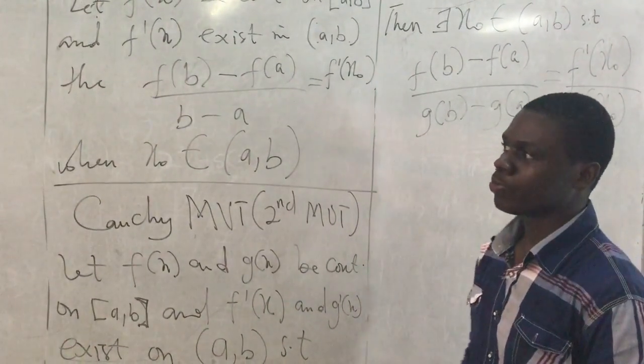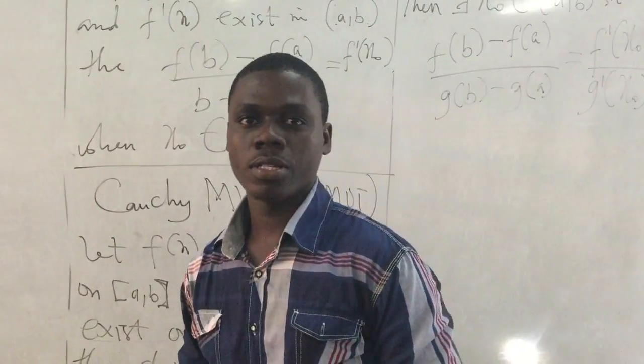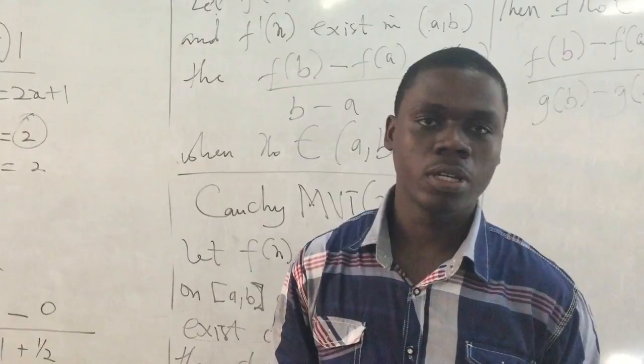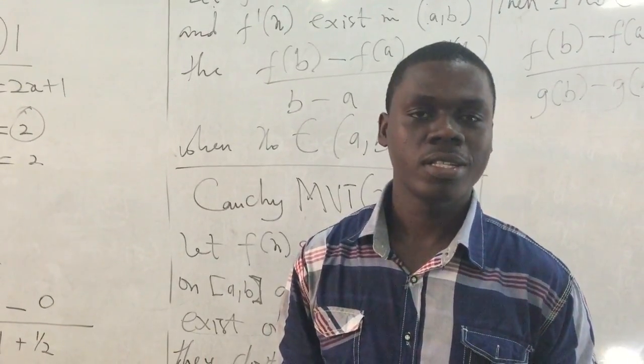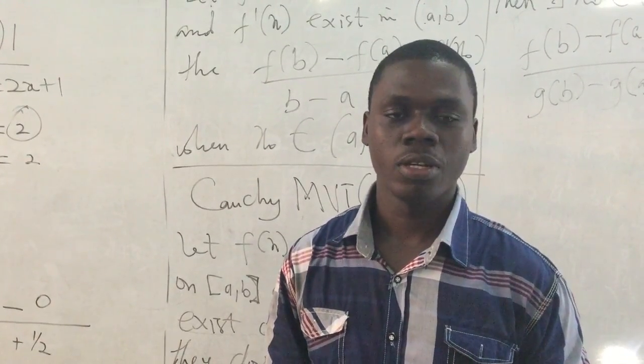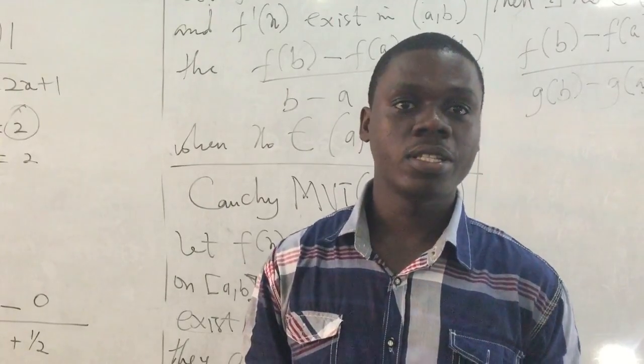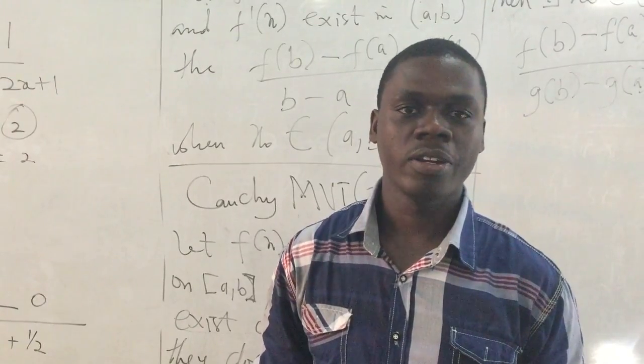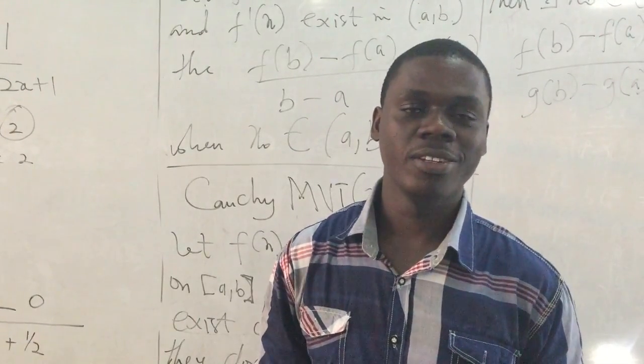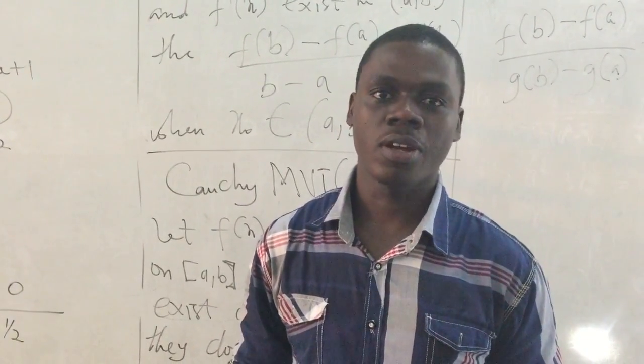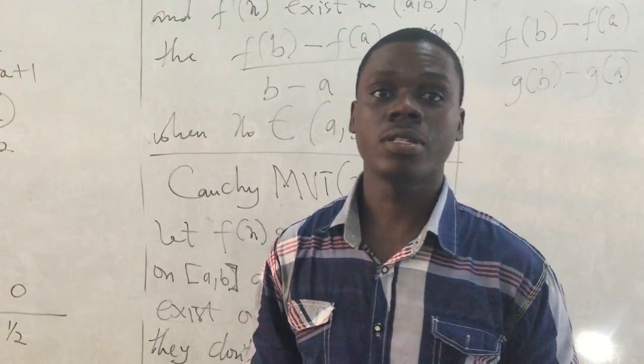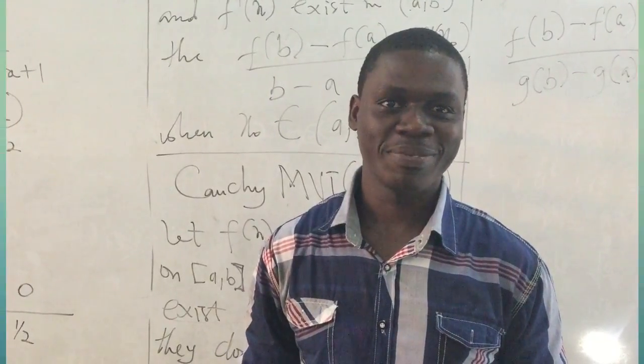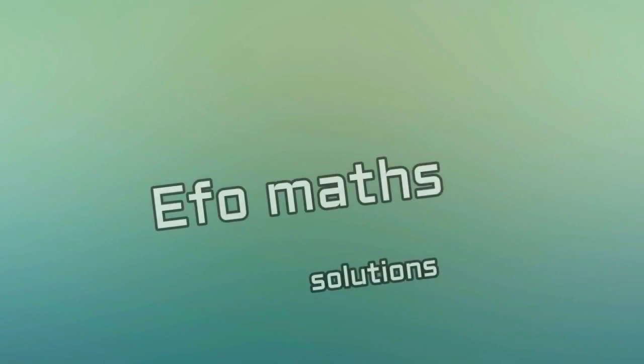That is the Cauchy Mean Value Theorem. Unlike the first one where we are looking at one function, now we are looking at two functions which are continuous on the closed interval, their derivatives also exist in the open interval such that they don't vanish together. And that will be the Cauchy Mean Value Theorem. So I will end today's video here. We will do more sessions as far as the differential theorems are concerned in our course Introductory Analysis. Thanks very much. Bye.